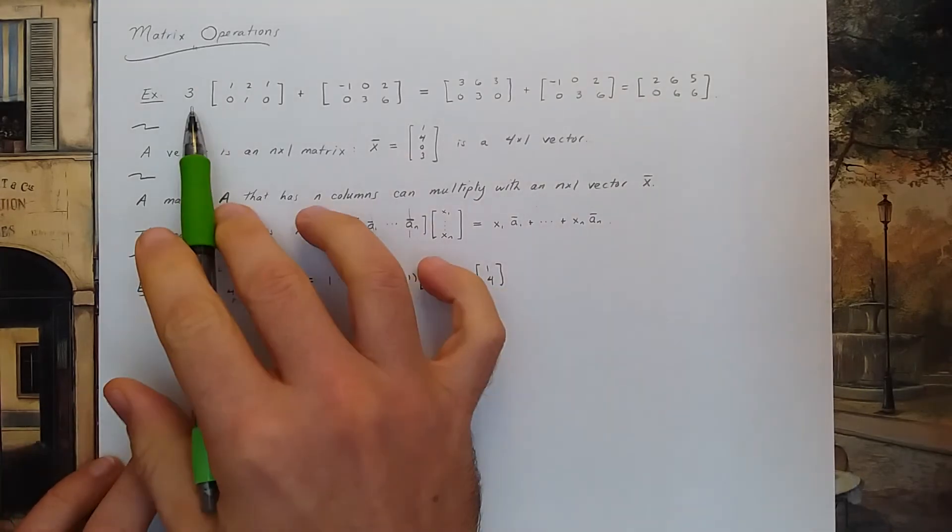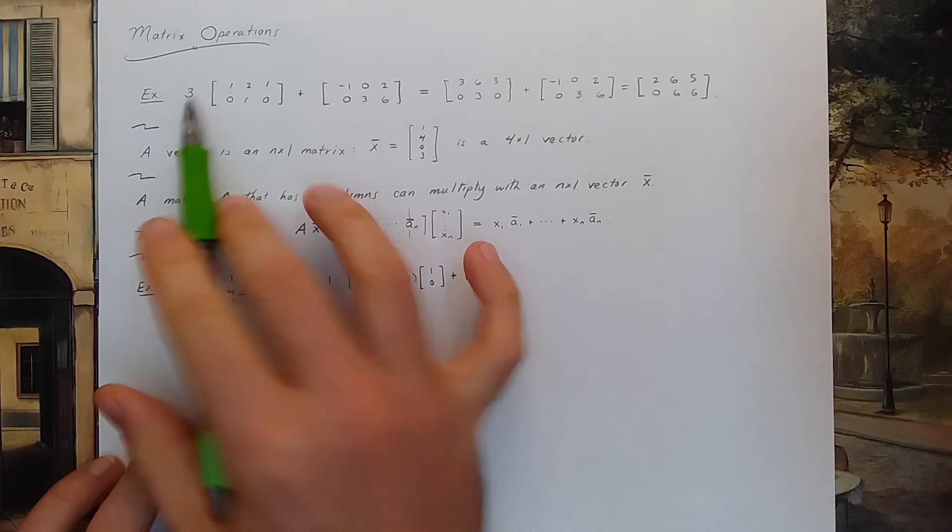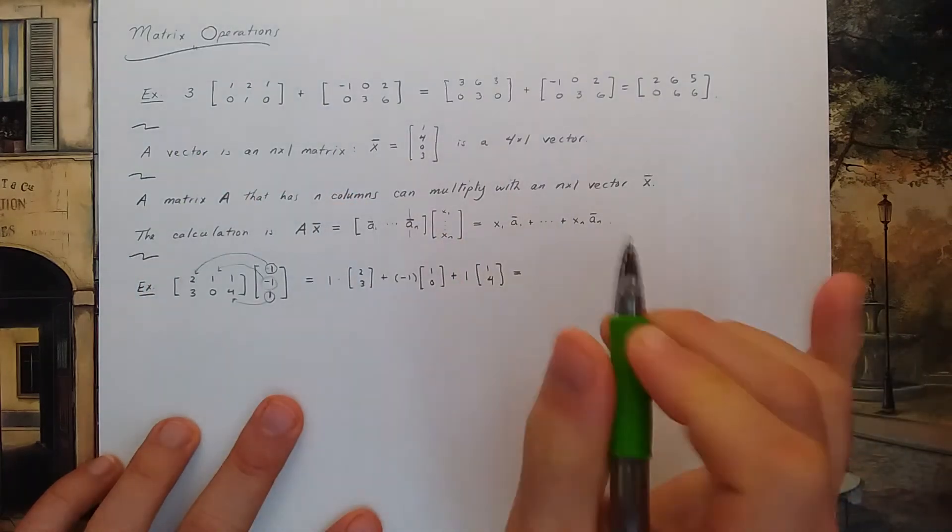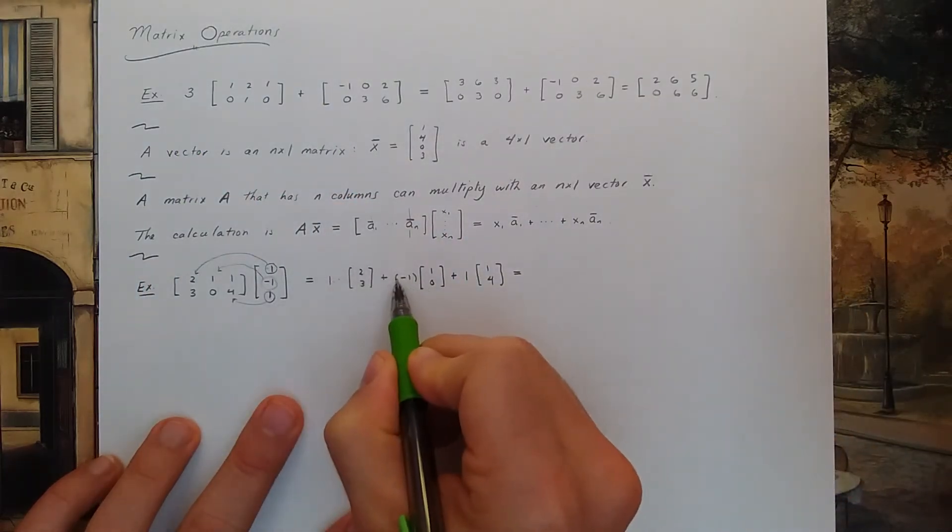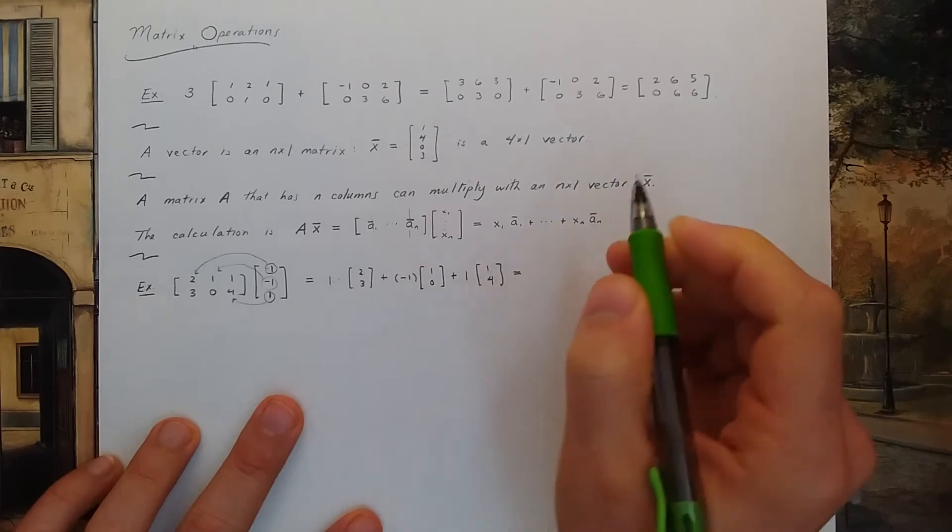And since I know how to add two matrices or vectors together and multiply by constants, I could just do that. So I get 1 times 2 minus 1 plus 1.